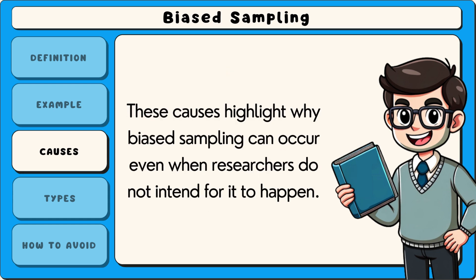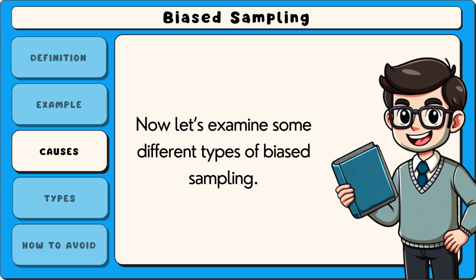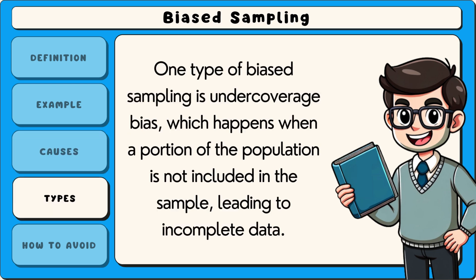These causes highlight why biased sampling can occur even when researchers do not intend for it to happen. Now let's examine some different types of biased sampling. One type is under-coverage bias, which happens when a portion of the population is not included in the sample, leading to incomplete data.